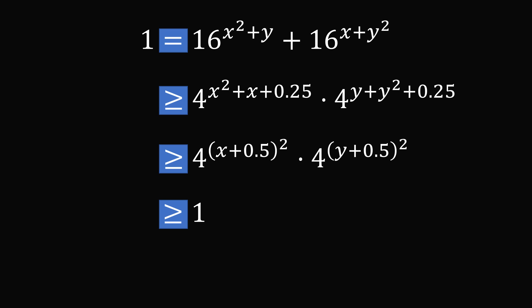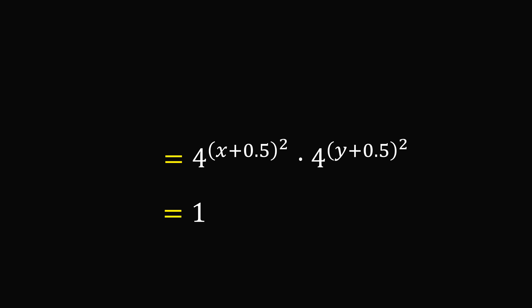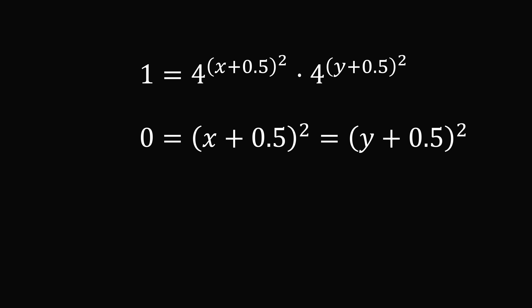Now, 1 is equal to 1, which means each of these inequalities must actually be an equality. So all of these are equal to 1. In particular, we must have 1 equal to the product of 4 raised to the power of x plus 0.5 squared, and 4 raised to the power of y plus 0.5 squared. Since each exponent is greater than or equal to 0, and 4 raised to 0 is equal to 1, it must be the case that each exponent equals 0. So 0 is equal to the square of x plus 0.5 and 0 is equal to the square of y plus 0.5. We can solve these equations to get that x is equal to y is equal to negative 0.5. And that's the answer.